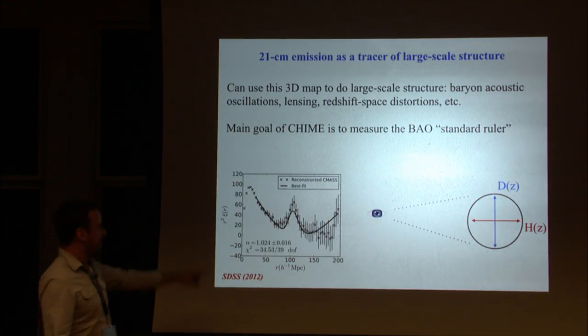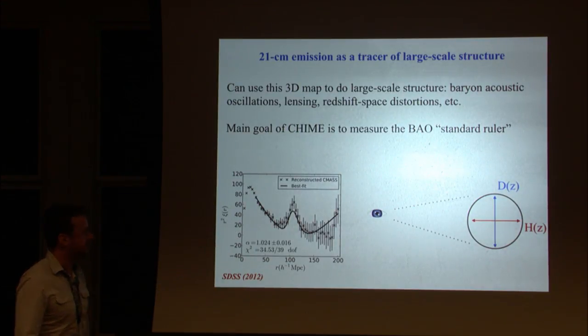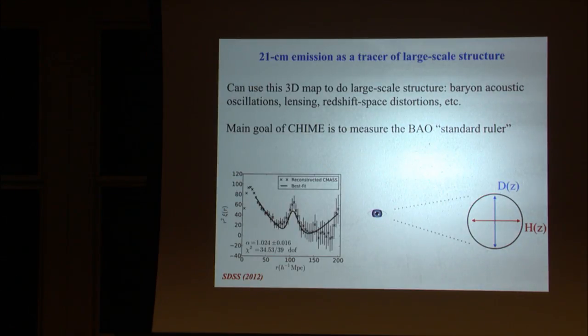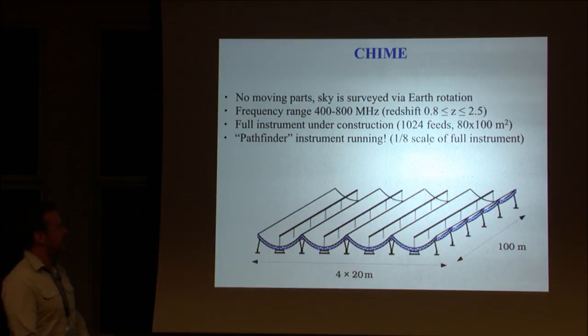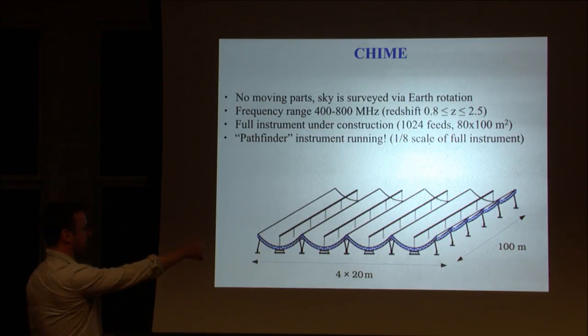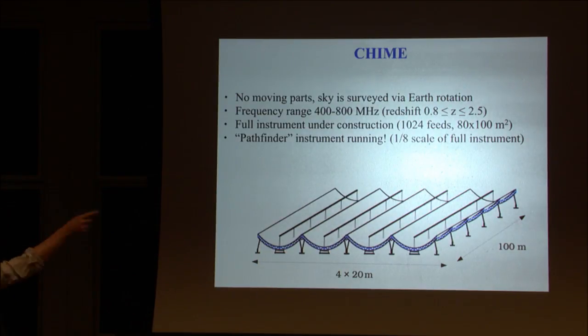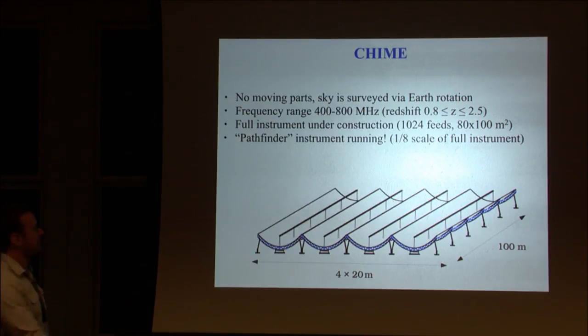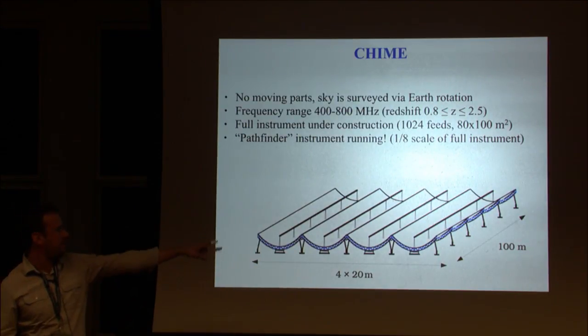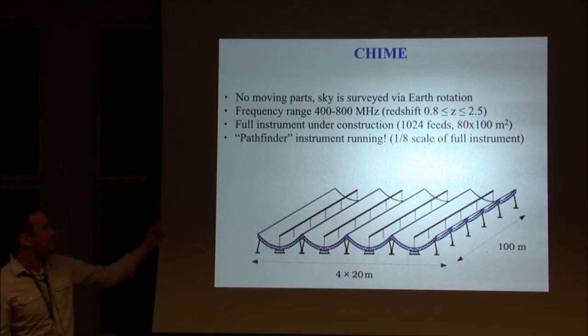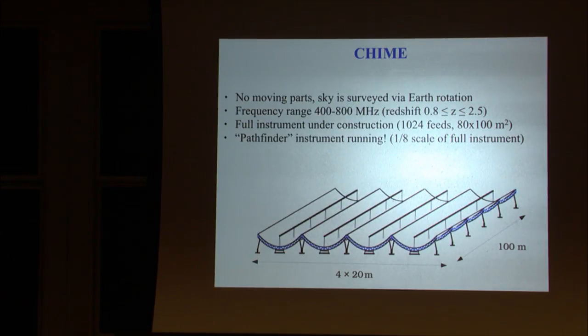The main science goal of CHIME is to measure the BAO feature in radio wavelengths and map out the expansion history of the universe. I'll show a few slides with the hardware. CHIME has no moving parts. These cylinders just sit on the ground and the sky is scanned by earth rotation. We measure redshifts 0.8 through 2.5. The full instrument is about a hundred meters on a side and we'll have 1,024 feeds. We have a pathfinder under construction that should be finished over the winter.